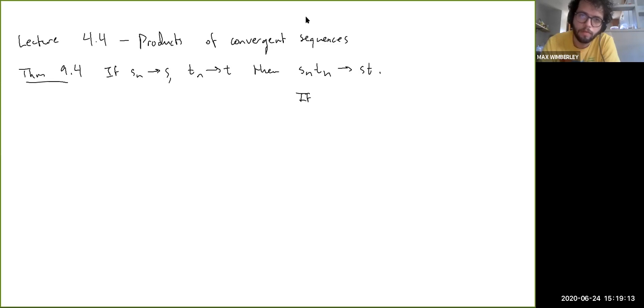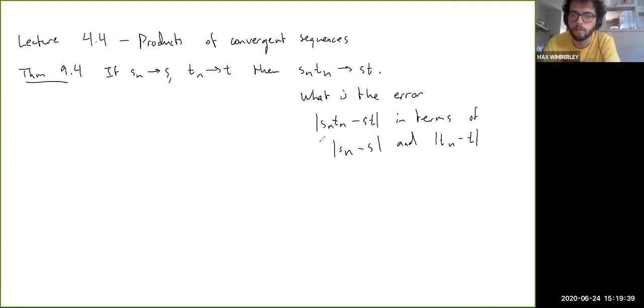Basically, what is the error Sn Tn minus St in terms of Sn minus S, this error, and Tn minus T? If you think about it as sort of errors or little deltas or something, we want to understand the change in the product in terms of these individual changes.